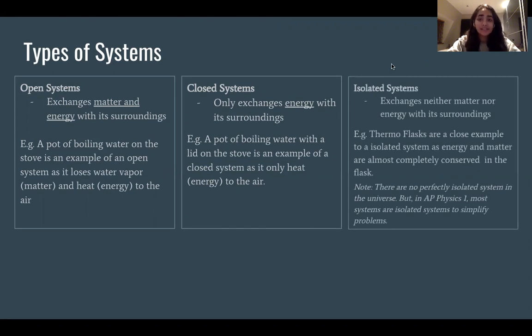And finally we have isolated systems and this exchanges neither matter nor energy with the surroundings, and there are pretty much no isolated systems in the universe. They're pretty hard to come by, so we have to take that into consideration. But of course in physics 1 we do assume that everything is an isolated system purely because that simplifies the problem.